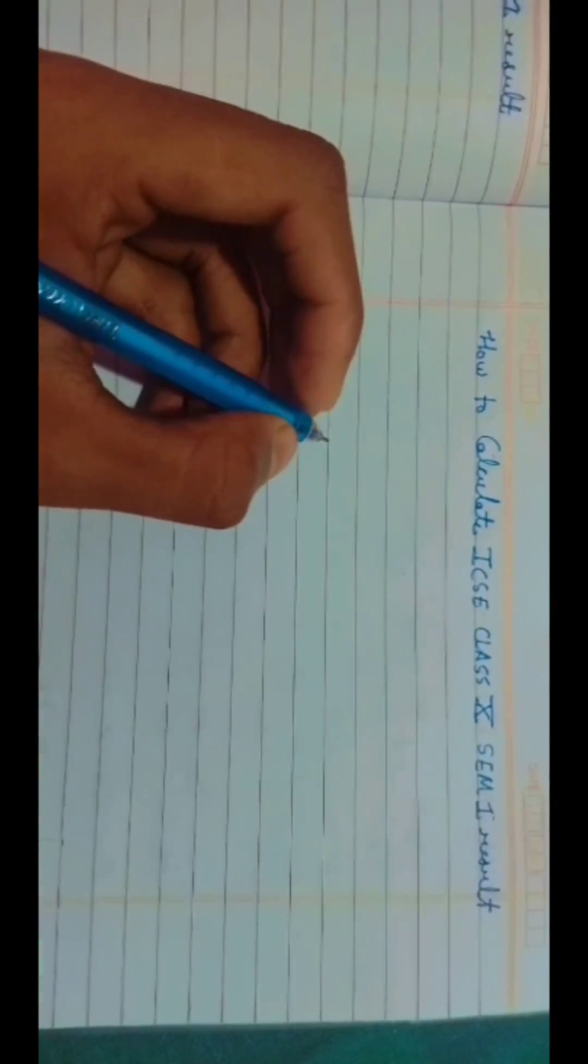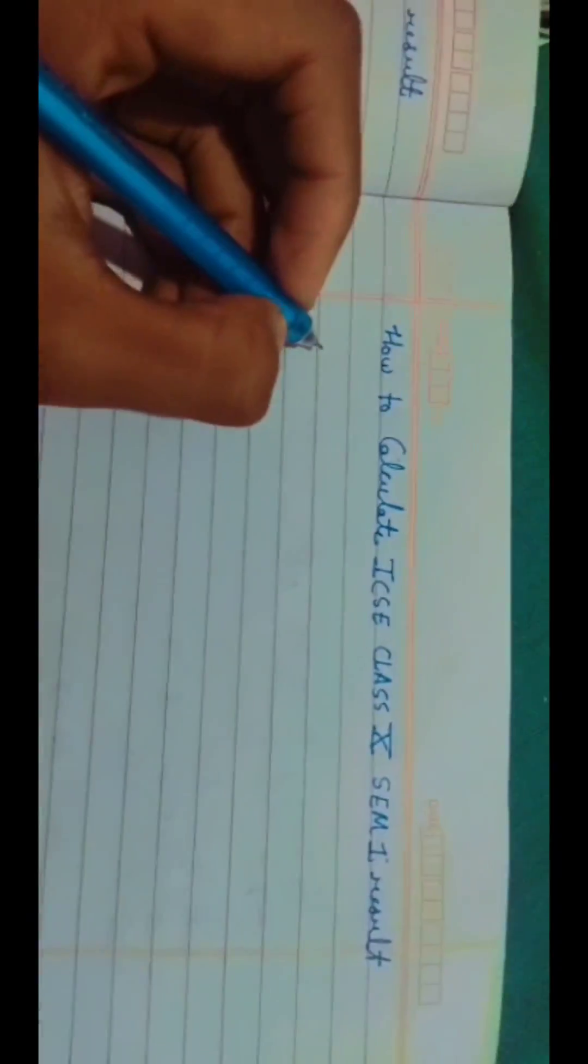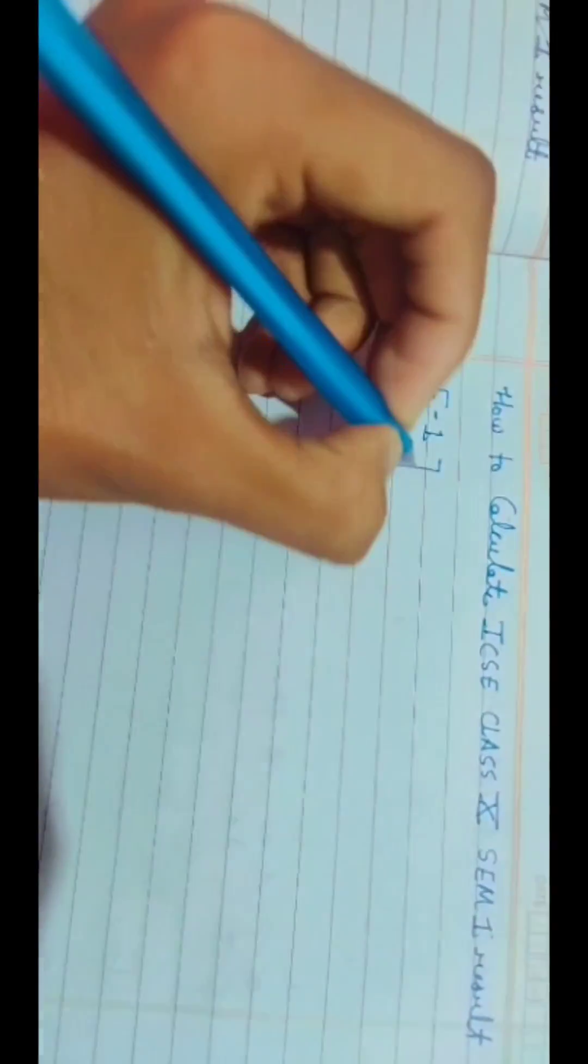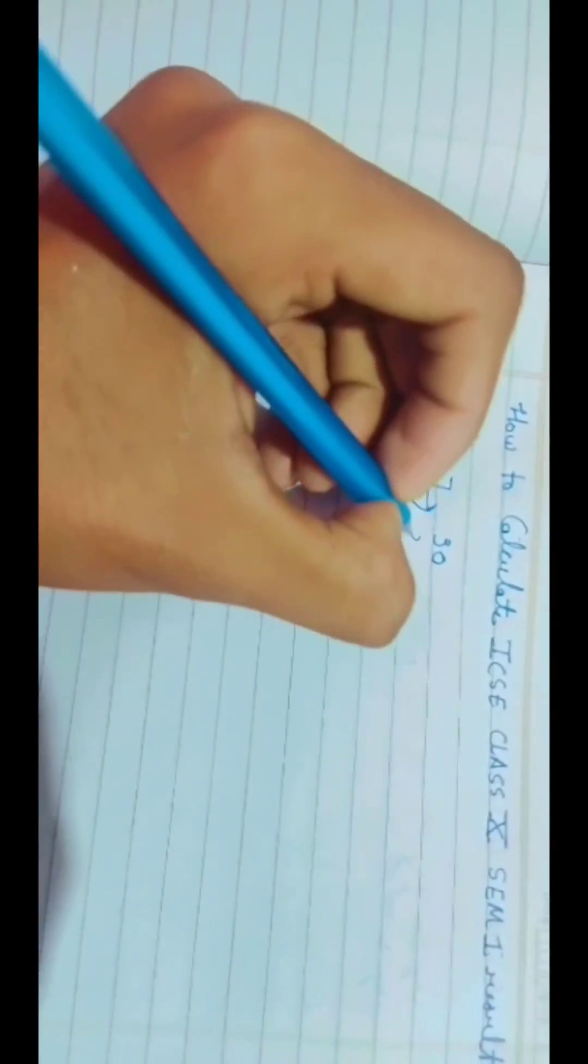Today we are going to discuss how to calculate ICSE class in semester one result. So there are six groups. First group is English language and literature. It is the necessary group. Whatever marks would be, it will be in the top five.